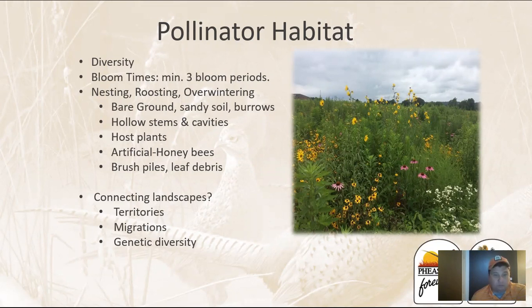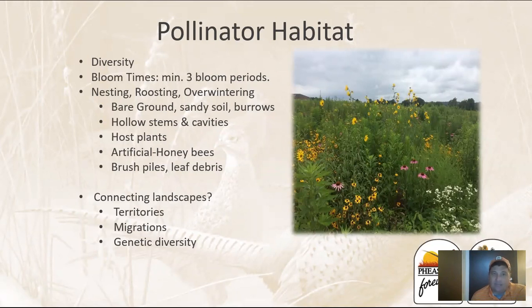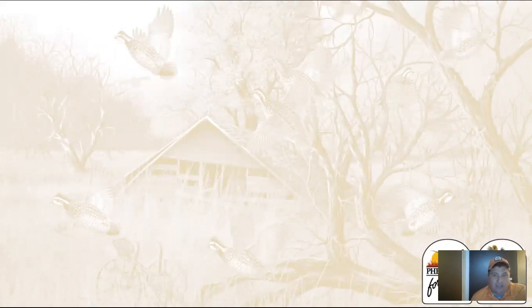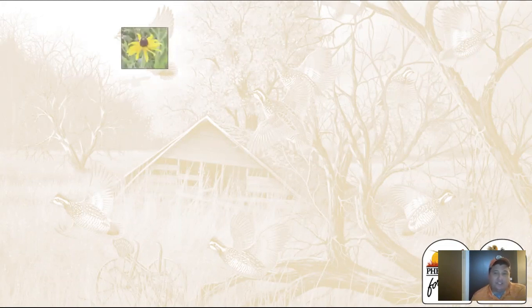Making sure that we have multiple bloom periods, good quality nesting and roosting, all the host plants for all those species, the various types of habitat requirements as far as stem densities. And also connecting those landscapes — knowing that we have to have ingress, egress, and movement between habitats. Another very important factor is choosing an appropriate seed mix or trying to manage an area to have maximum species diversity throughout the growing seasons.